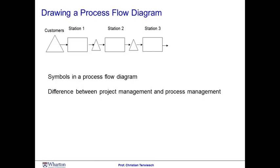Let me point to an important difference between project management and process management. Process management is about doing things repeatedly — we want to serve hundreds of customers over the day, and we are primarily interested in computing the flow of customers through the process. It turns out that for the flow of customers, it doesn't matter whether stations one, two, and three work sequentially or in parallel. Every customer in the flow has to go through all three stations, so we are not going to serve more customers by working in parallel.